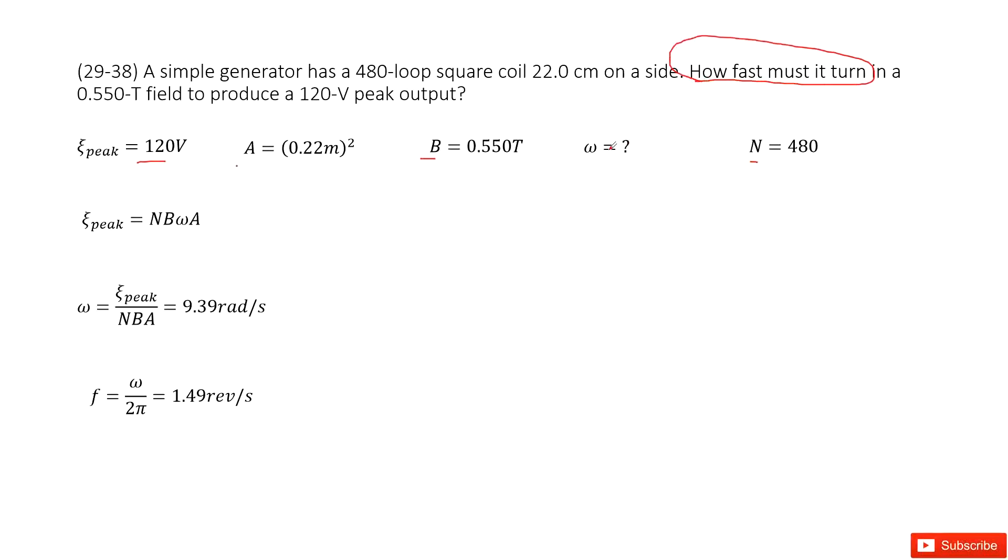So now we can write down the equation for the peak output voltage as NBωA. And in this equation, you can see only omega is the unknown quantity. This is angular velocity. So we reorganize this equation, gives a function for epsilon right there.